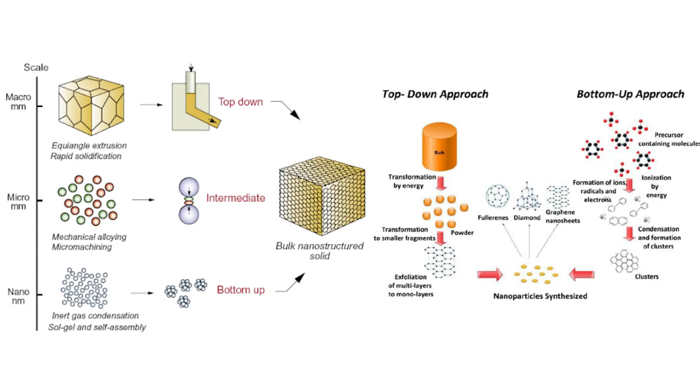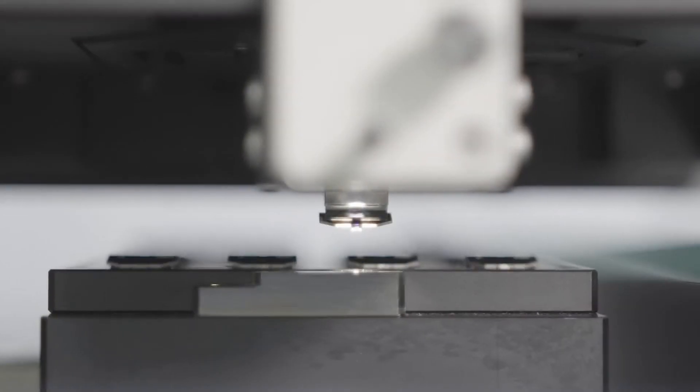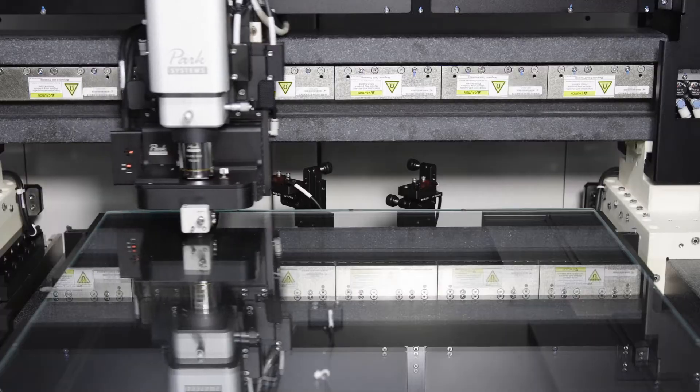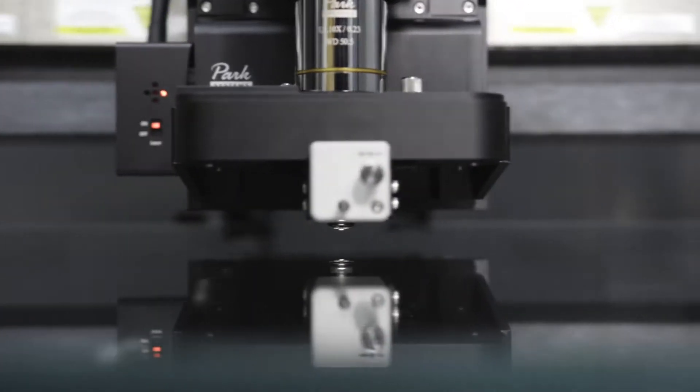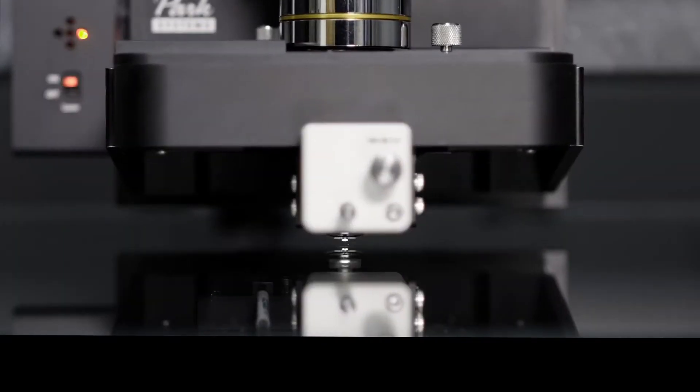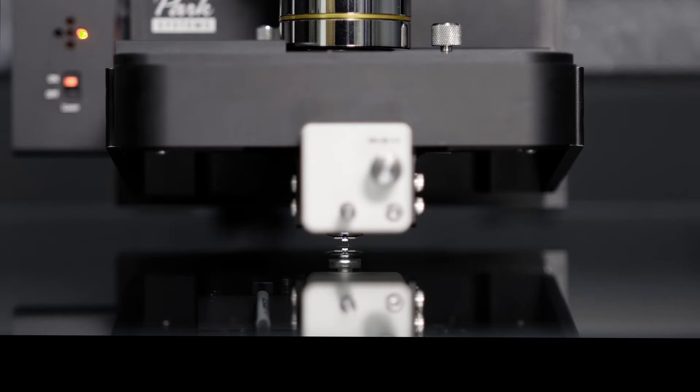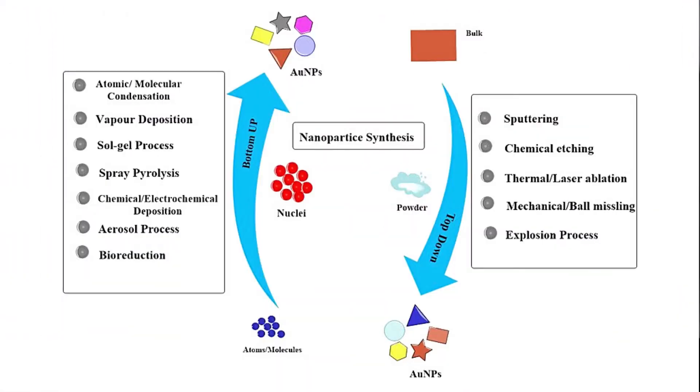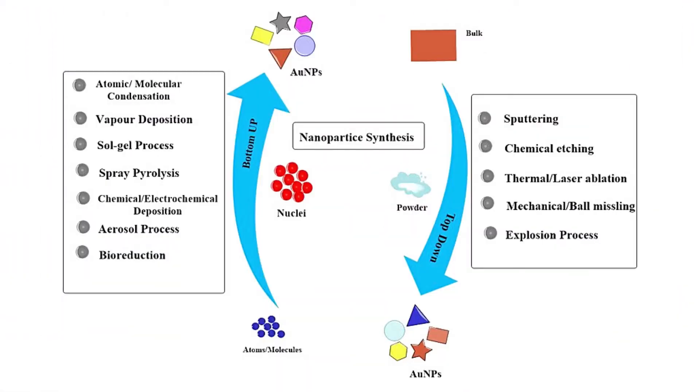In the top-down approach, starting materials of an order typically in the micrometer, millimeter, or centimeter size range are broken down using a variety of techniques until the average size of the smaller units thus formed is roughly as expected in the nano range. Some of the common techniques used in top-down synthesis of nanomaterials are as follows.